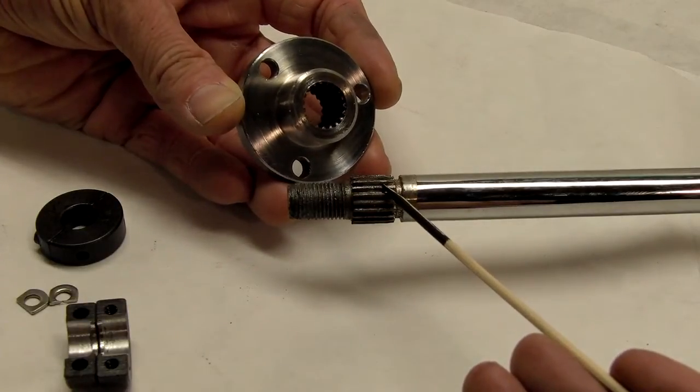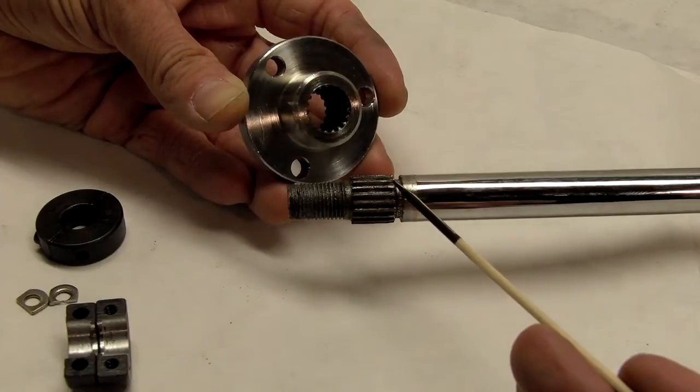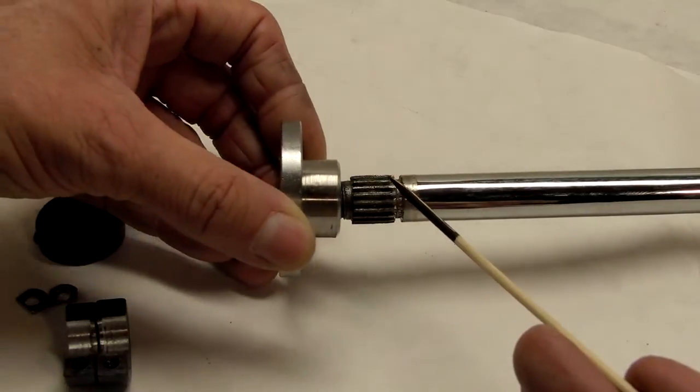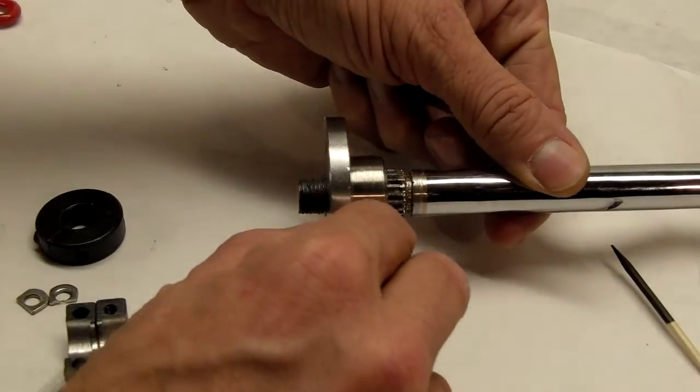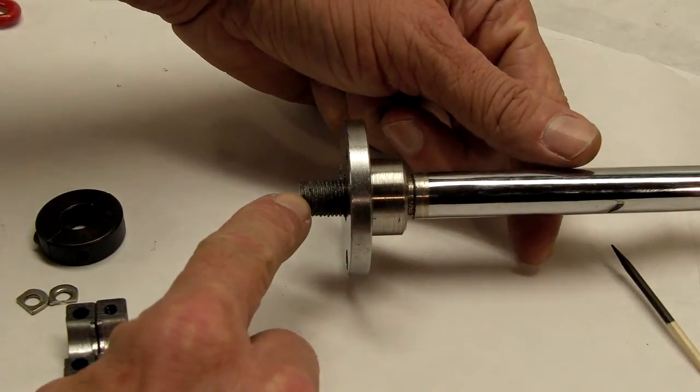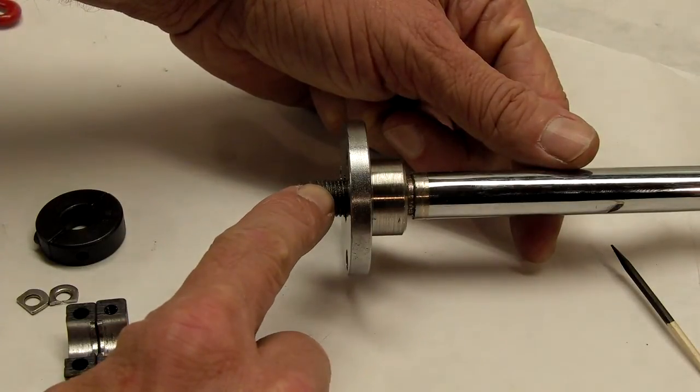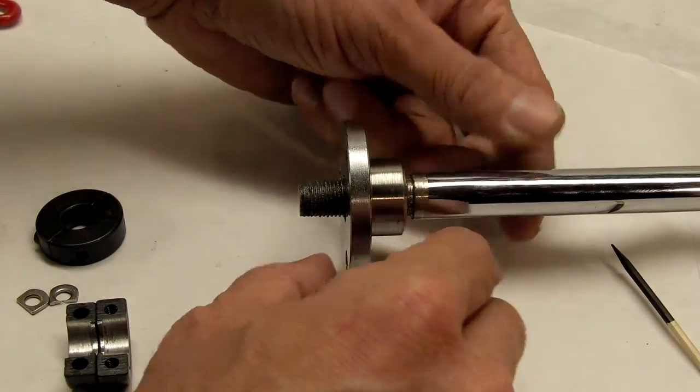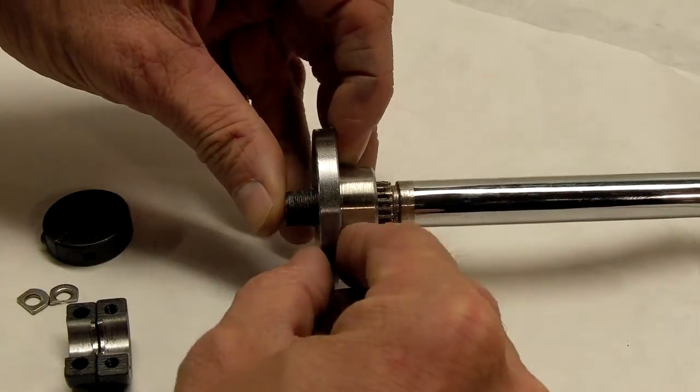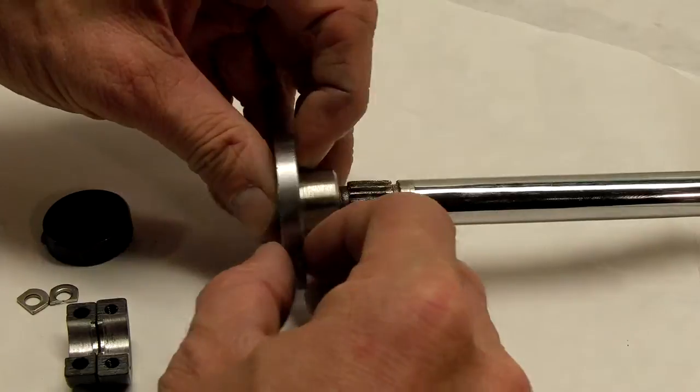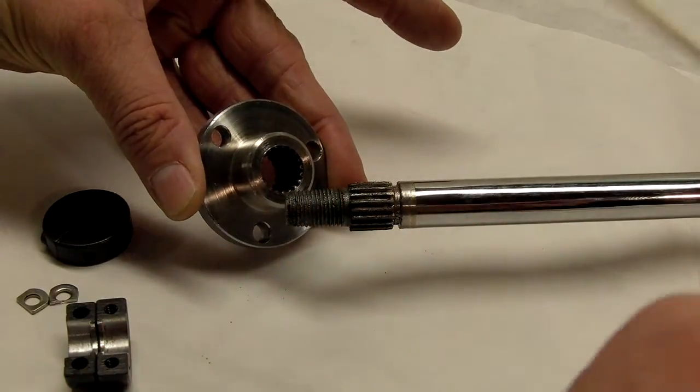They have a spline on the shaft and an internal spline on the hub. What normally happens with these is when you put the half-inch nut on this end of the shaft and tighten it down on the steering wheel, it's supposed to tighten this hub up. It actually does that by bottoming the internal spline on this hub with this shoulder back here.